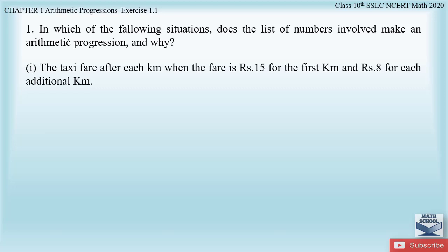Let us begin the first question from Exercise 1.1, which says: in which of the following situations does the list of numbers involved make an arithmetic progression, and why? The first part is about taxi fare after each kilometer, when the fare is rupees 15 for the first kilometer and rupees 8 for each additional kilometer.